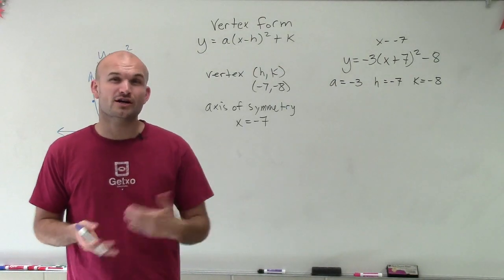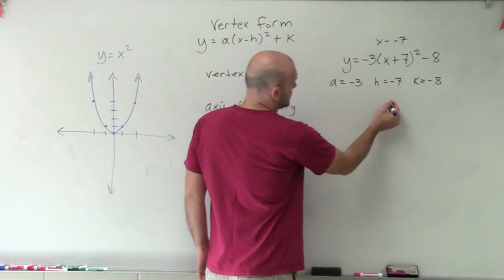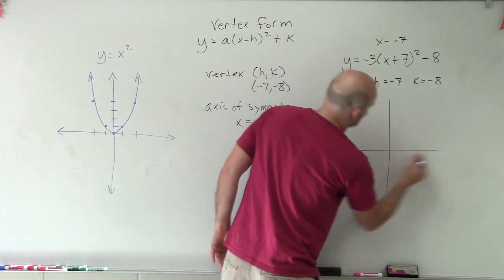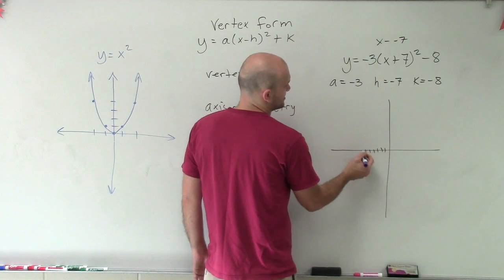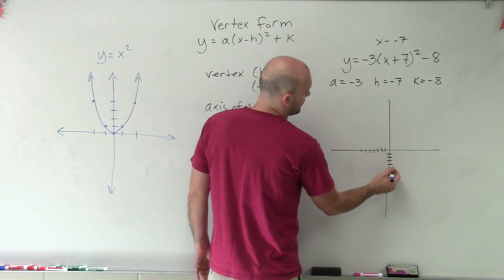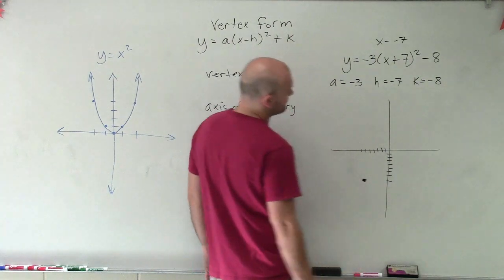Now, to find the intercepts, we are going to want to do a little probing into how this graph is going to look. So when I go ahead and sketch this graph, I know I'm going to go seven units to the left and eight units down. One, two, three, four, five, six, seven. One, two, three, four, five, six, seven, eight.